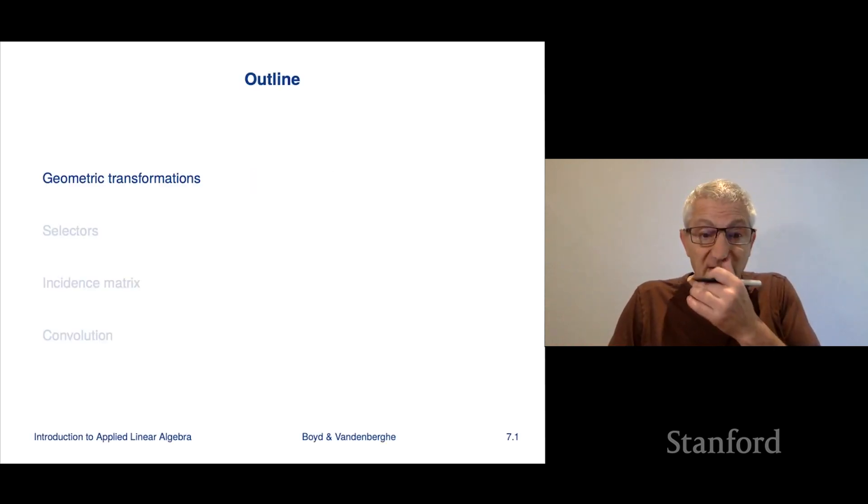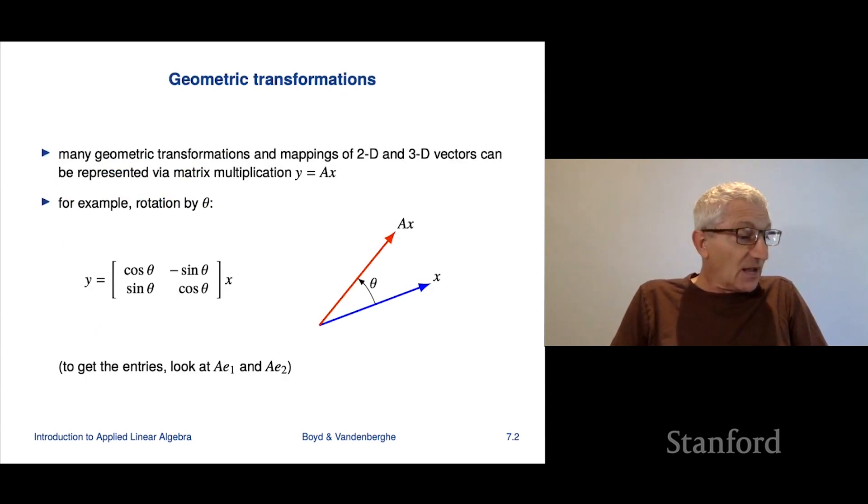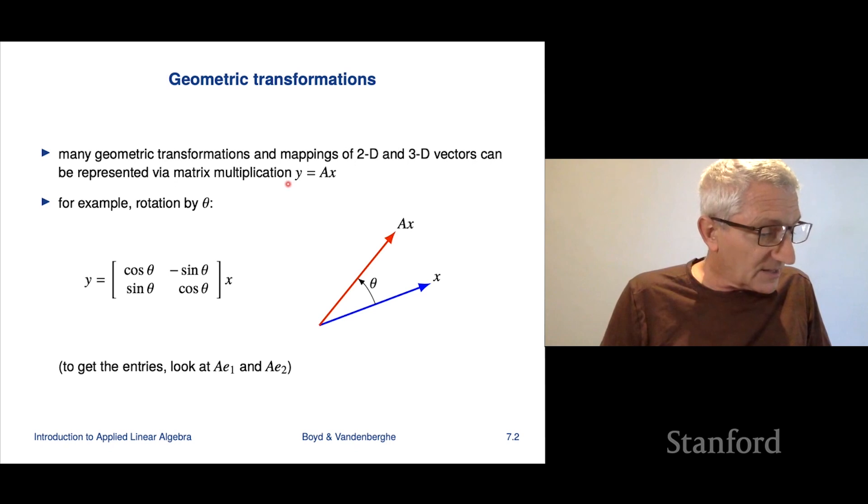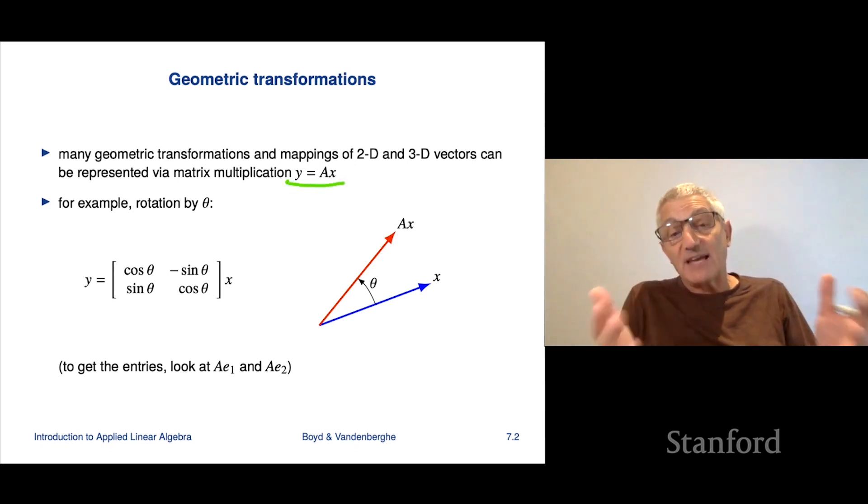So we'll start with geometric transformations. A lot of geometric transformations in 2D or 3D can be represented via matrix multiplication. So that looks something like this, just y equals Ax. You think of A as a matrix that carries out the geometric transformation. So here's an example.